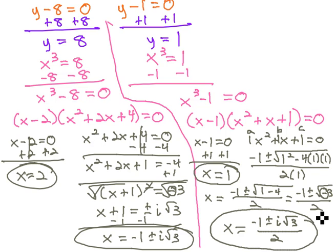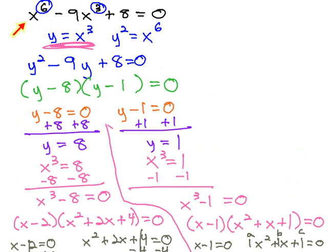2, 1, negative 1 plus i root 3, negative 1 minus i root 3, negative 1 plus i root 3 over 2, and negative 1 minus i root 3 over 2, all as solutions to the original equation.